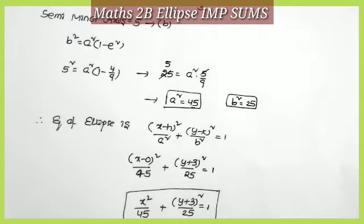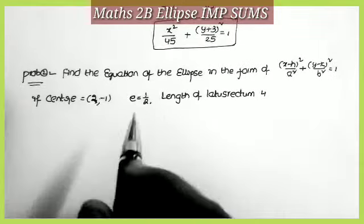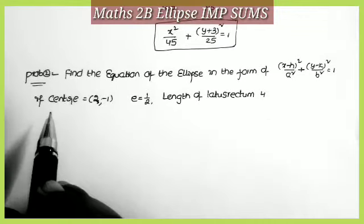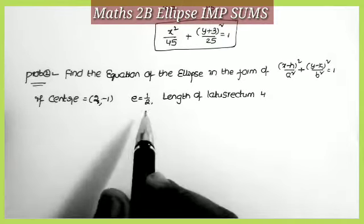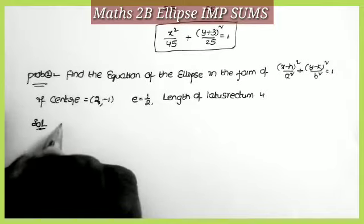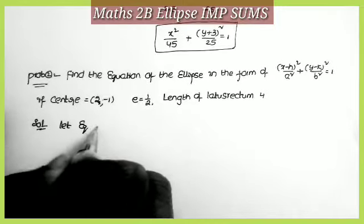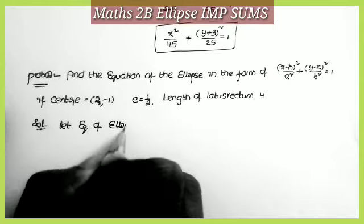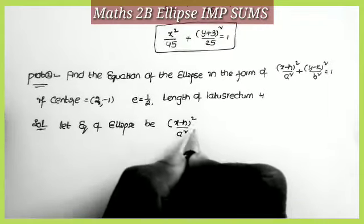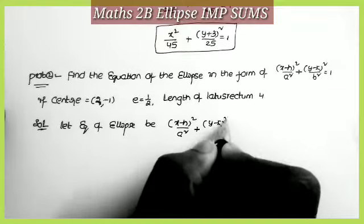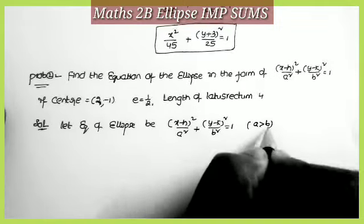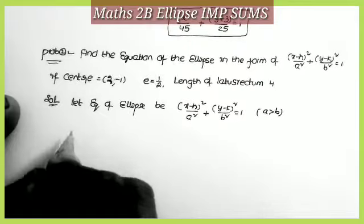The next problem: find the equation of the ellipse in the form (x−h)²/a² + (y−k)²/b² = 1, if center = (2, −1), e = 1/2, and length of the latus rectum = 4. Applying the same process: let the equation of the ellipse be (x−h)²/a² + (y−k)²/b² = 1. I prefer the case a > b here as well.